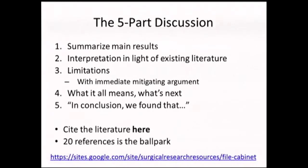The discussion has five parts. The first paragraph summarizes the main results of your study. The next paragraph, or two, interprets what your study found in light of the existing literature. You always have a limitations section, and in your limitations you mitigate the limitations — you might think something would be a limitation, but explain why it's actually not such a limitation. The fourth part is more interpretive: what it all means and what's next. The fifth section is a paragraph that always starts 'In conclusion, we found that...' and you repeat once again your main findings. This is where you do your extensive review of the literature. Don't use too many references — a scientific manuscript shouldn't really have more than 40 references; 20 to 30 is a reasonable number.